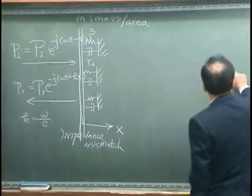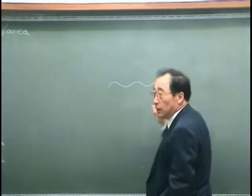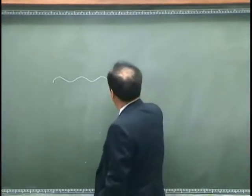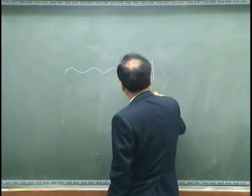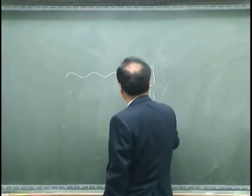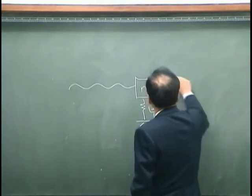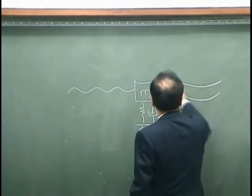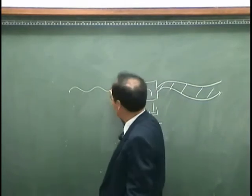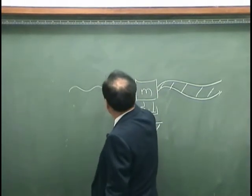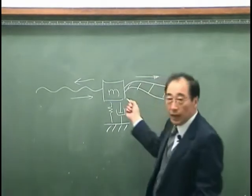For example, when you have a string over here, mass, spring, dashpot, we may want to see how much wave is transmitted, how much wave is reflected.